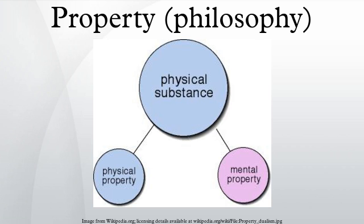The terms attribute and quality have similar meanings. In classical Aristotelian terminology, a property is one of the predicables. It is a non-essential quality of a species, but a quality which is nevertheless characteristically present in members of that species. For example, the ability to laugh may be considered a special characteristic of human beings.